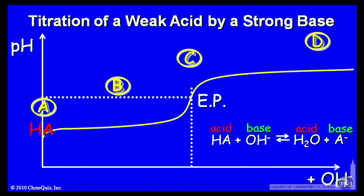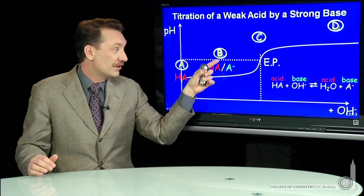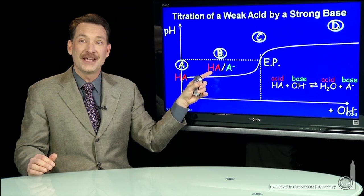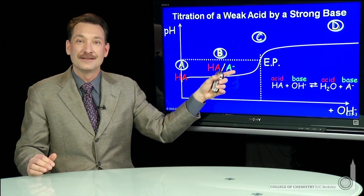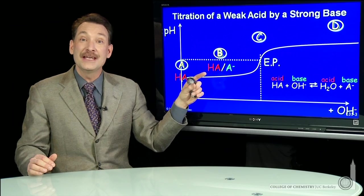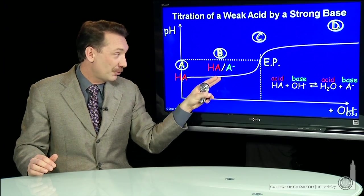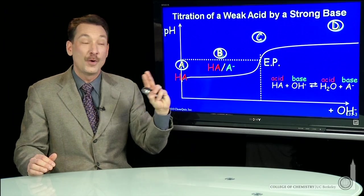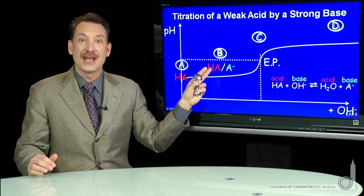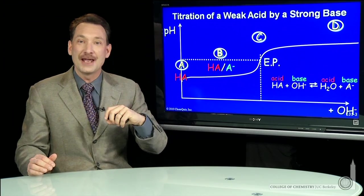At point B, we're exactly halfway between the endpoint and the starting point. We've converted half of the HA to A minus, and these concentrations are about equal. In fact, you could find a point directly in the center where the HA concentration equals the A minus concentration.